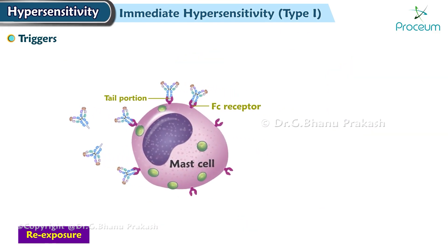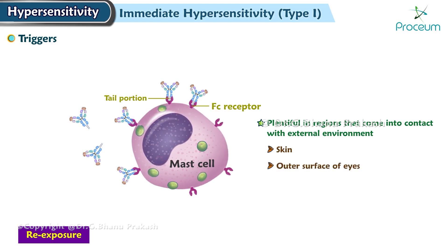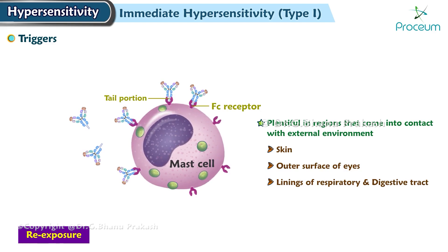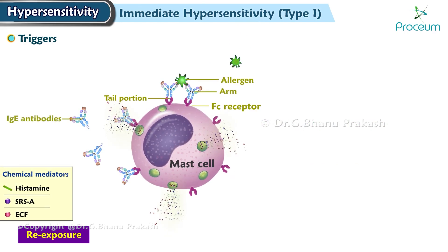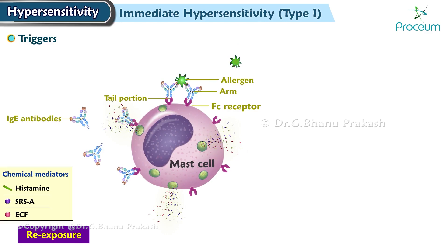Mast cells are most plentiful in regions that come into contact with the external environment, such as the skin, the outer surface of the eyes, the linings of the respiratory system, and the digestive tract. Binding of an appropriate allergen with the outreached arm regions of the immunoglobulin E antibodies that are lodged tail-first in a mast cell or basophil triggers the rupture of the cell's granules.